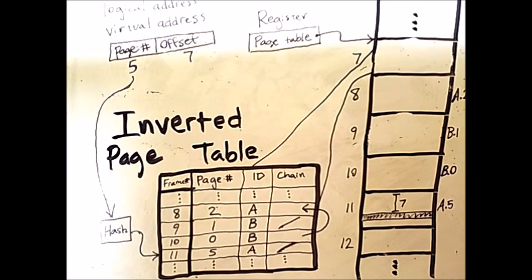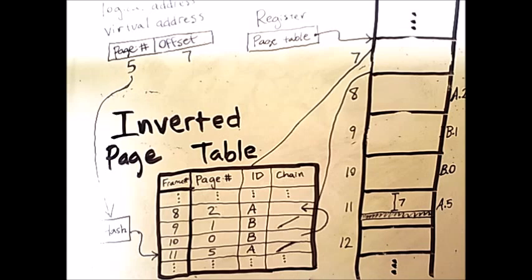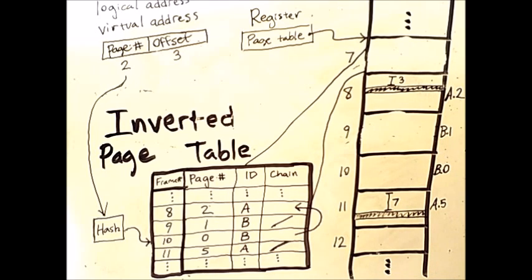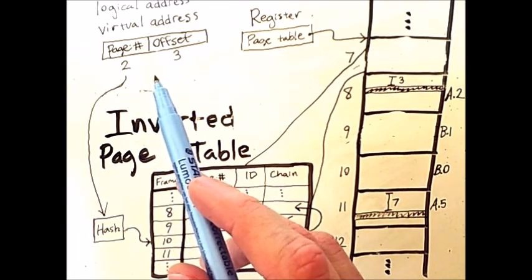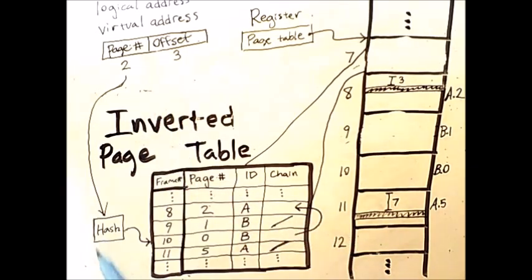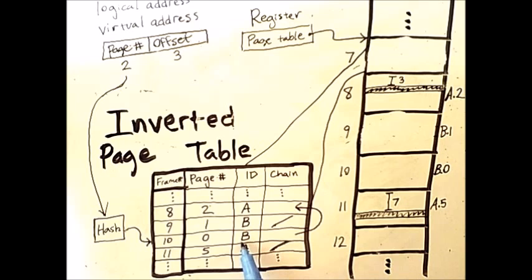Now, in those cases where we have a clash with our hash function, we use a chain pointer in the inverted hash table. Let's see how that works with a different virtual memory address. Let's say I want an address from page 2 of process A. I take 2 and I feed it into my hash function, but it just so happens that an input of 2 leads to an output of 10. Looking at my inverted page table, I see that the page associated with frame 10 is page 0 of process B.